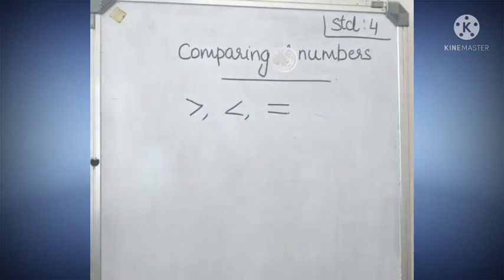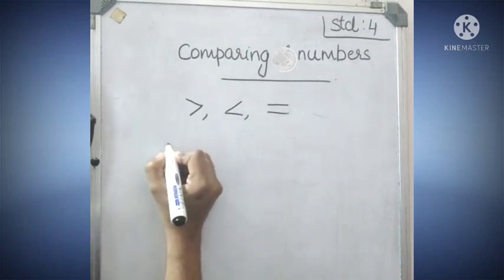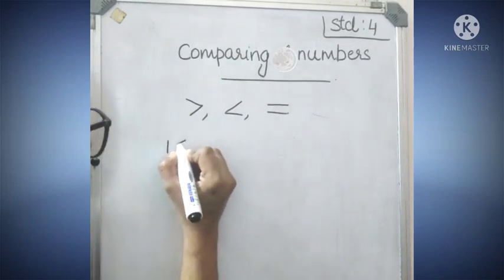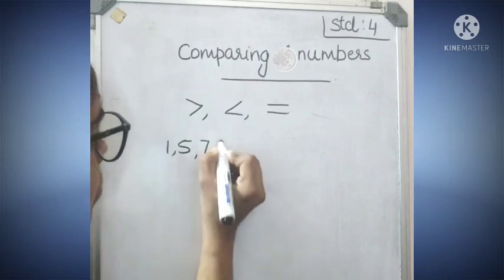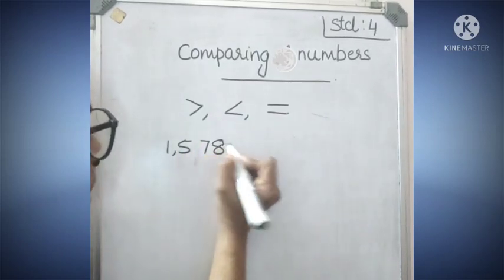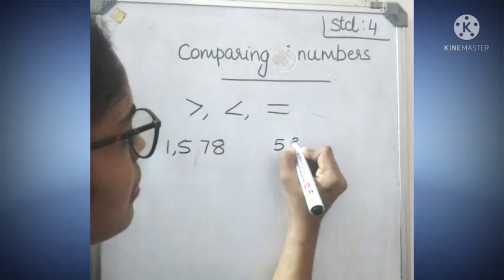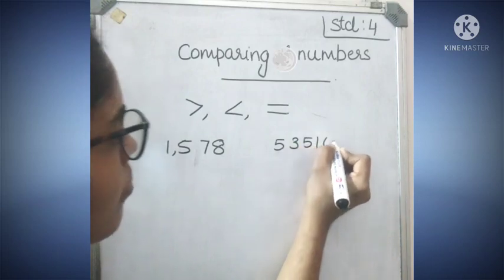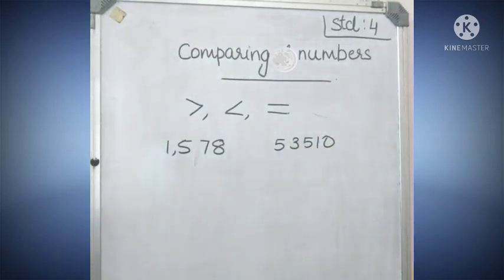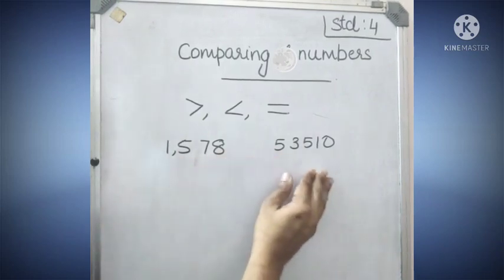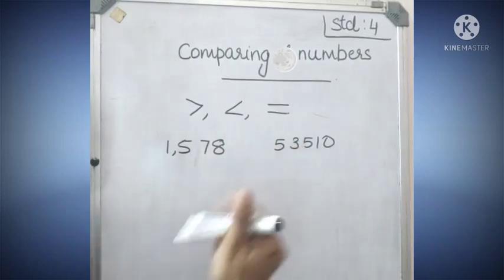There are some rules in finding which number is highest or which number is the lowest. First, you count the digits. If a four-digit number and a five-digit number is given, which one is the greatest? You all know — the greatest is the five-digit number. Comparing the digits: here four digits, here five digits. So this number is the greatest.